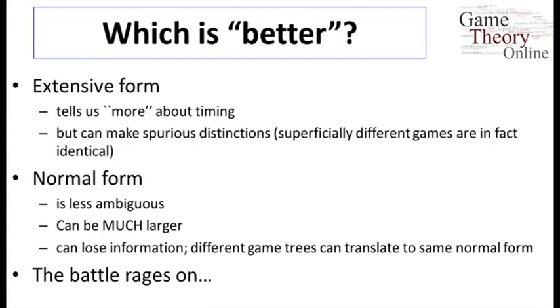Well, you can argue the following. You could argue that the extensive form gives us more information, gives us more timing information about what's happened before what. On the other hand, you could argue that it sometimes makes spurious distinction.